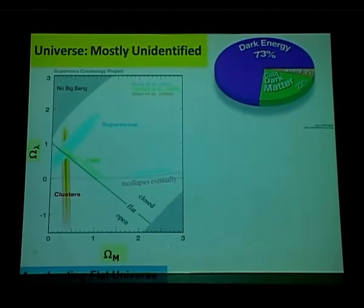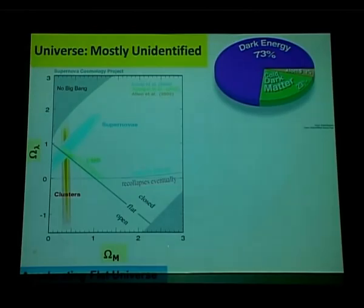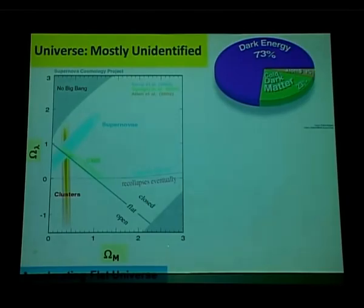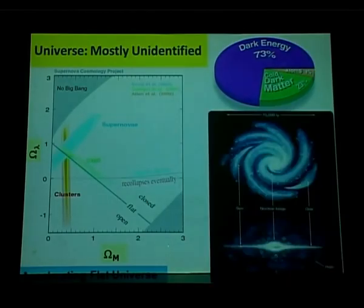Cosmology has taken a great leap in the last decade with precision measurements: cosmic microwave background, supernovae — work that was awarded the Nobel Prize in 2011. We live in an astonishingly shocking world. As scientists, having worked for such a long time, we think we understand everything — but unfortunately not. We understand less than 4% of the universe. The majority of it is unexplored and not understood.